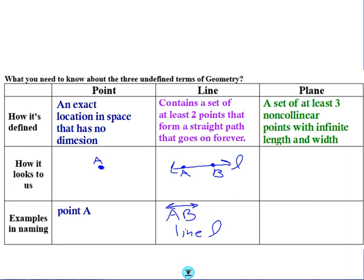If that looks like this, so basically, that's a horrible C. Basically, any three points that sort of just float around in space, then we can draw sort of a two-dimensional space around it. Examples in naming this, we can typically call it plane ABC.